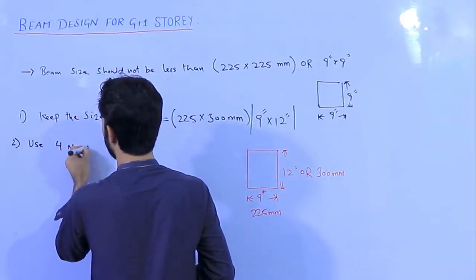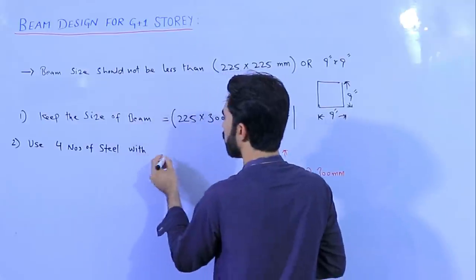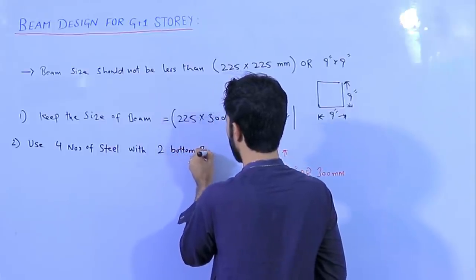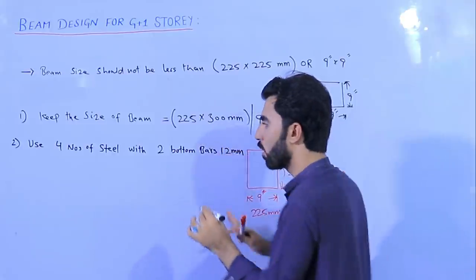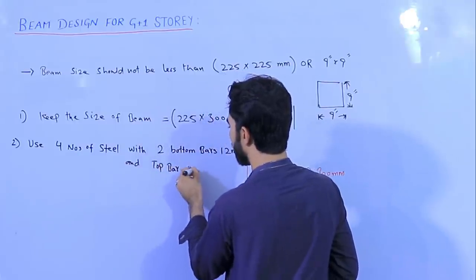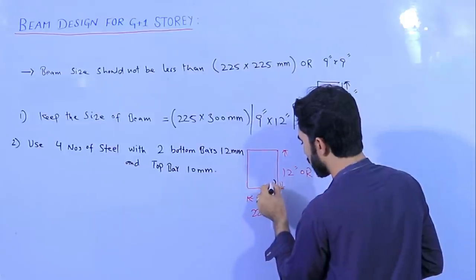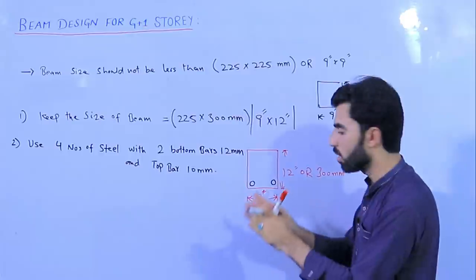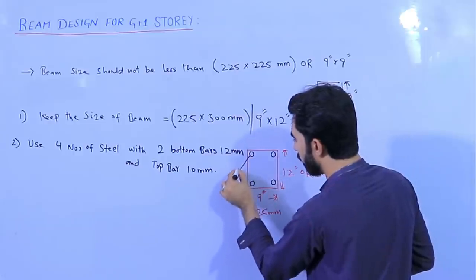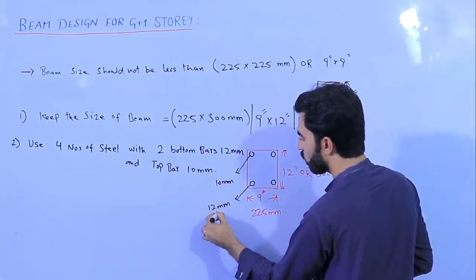The second point: use four numbers of steel bars — two bottom bars of 12 mm diameter and two top bars of 10 mm diameter. The top bar diameter should be 10 mm and the bottom bar diameter should be 12 mm.